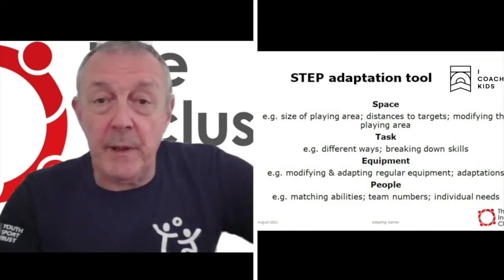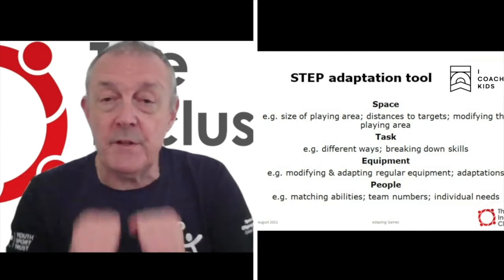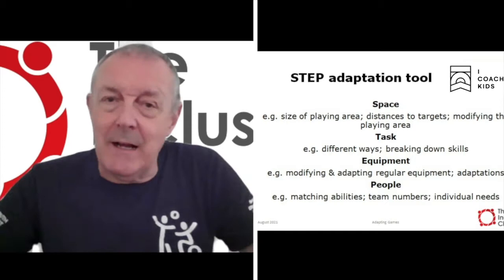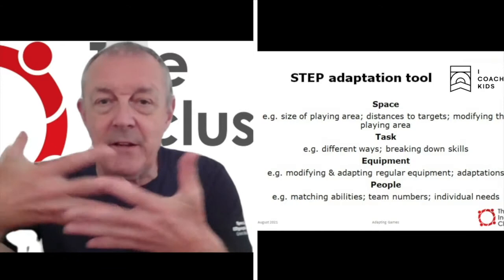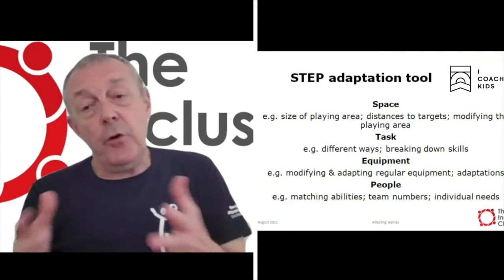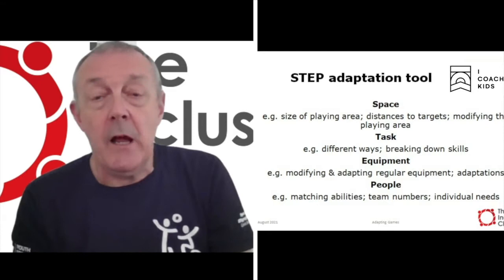The STEP adaptation tool is a very simple acronym which stands for four areas of any activity which we can adapt and modify in order to make that activity more inclusive. The first one is Space. We can modify space by making the playing area larger or smaller — larger means people may have to move about more, smaller means it's more interactive. It could be the distance between individuals and a target, or modifying the existing playing area by creating zones so that people can play in different parts according to ability.